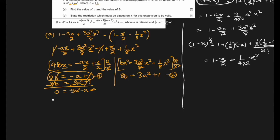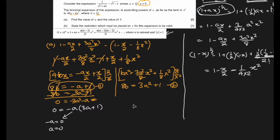Setting up the equation from comparing coefficients, we get an equation that gives us 0 = -a(3a + 1). Since the question states a ≠ 0, we reject a = 0. Therefore 3a + 1 = 0, giving a = -1/3.